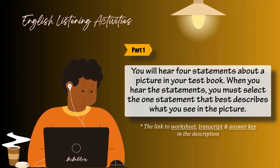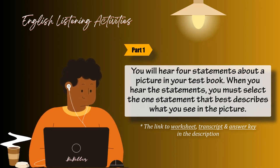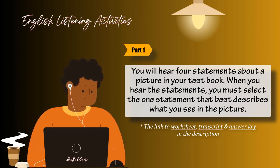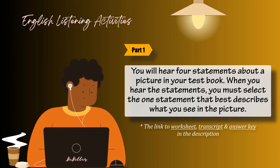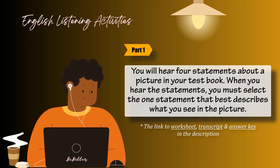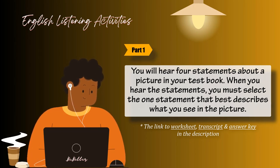Number 9. Look at the picture marked number 9 in your test book. A: The man is ripping up the newspaper. B: The man is doing two things at once. C: The man is talking into the microphone. D: The man is pointing at the monitor.